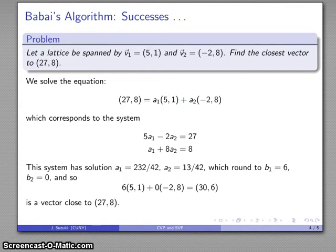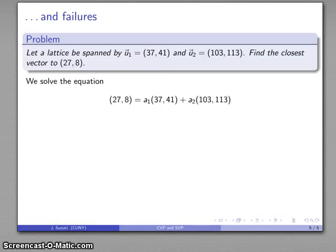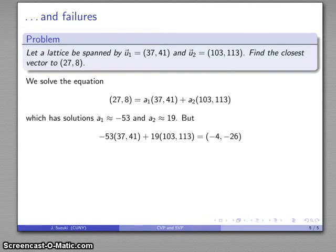Well, why do we need that reasonable orthogonality? Let's take a look at another basis for the same lattice. Earlier we determined that (37,41) and (103,113) is another basis for the same set of lattice points. I want to find the closest vector to (27,8). I'll solve that equation: (27,8) is some linear combination of our two basis vectors. I get solutions a₁ ≈ -53 and a₂ ≈ 19. But when I try -53(37,41) + 19(103,113), I end up at (-4,-26). This is not reasonably close to where I want to be at (27,8).